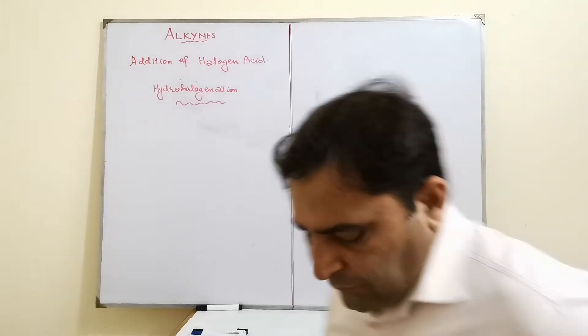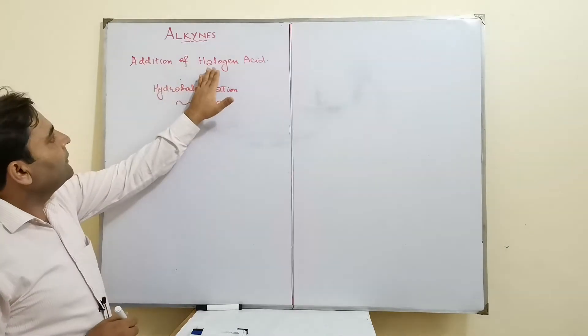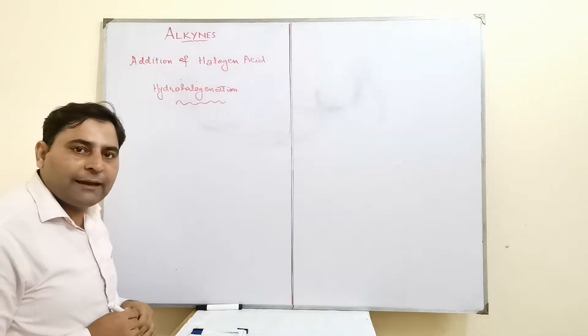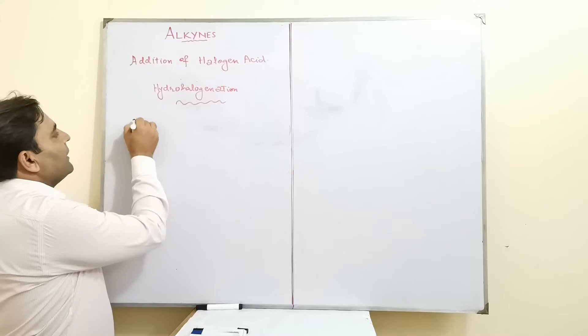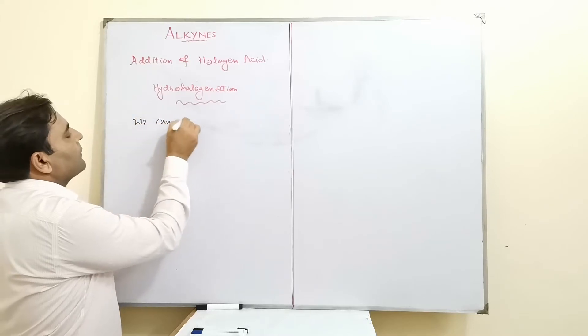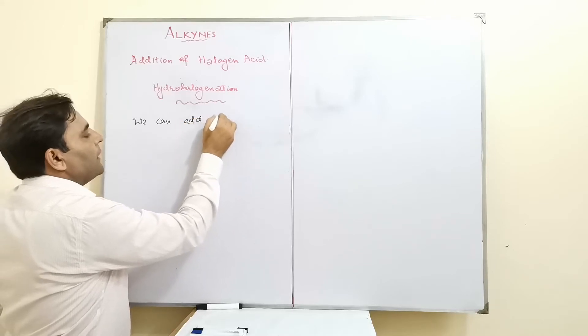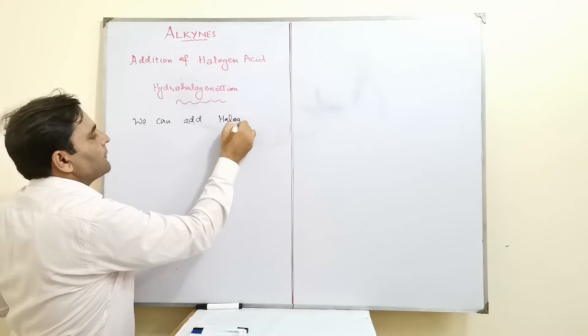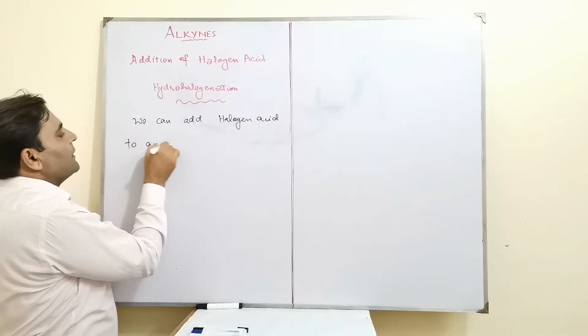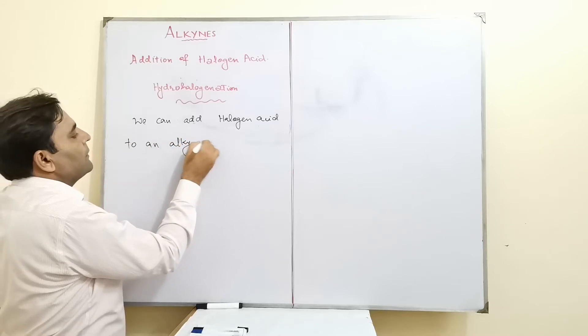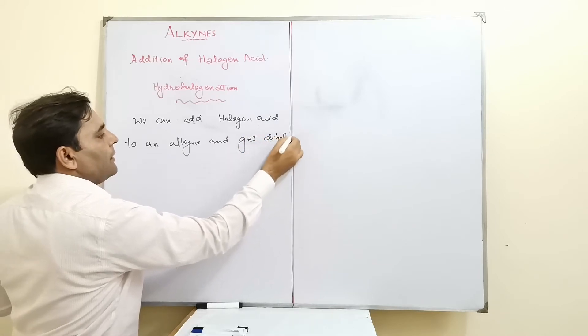Welcome viewers. Now we are going to discuss addition of halogen acid to an alkyne. We can add halogen acid to an alkyne and get dihaloalkene.